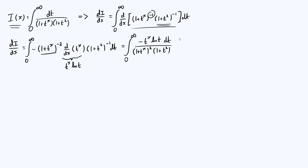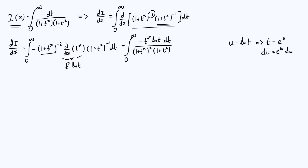We've got an expression for di by dx as an integral. Now we want to evaluate this new integral by making a substitution. Since we've got a ln t term in the numerator, let's let u equal ln t. That implies t is e to the u, and differentiating gives dt equals e to the u du.